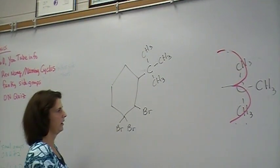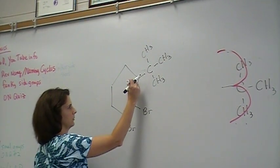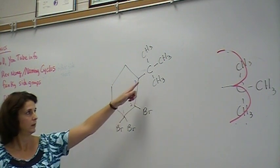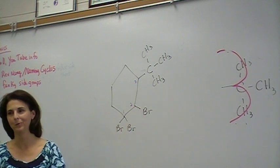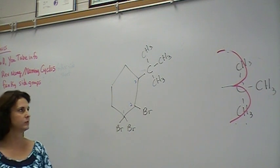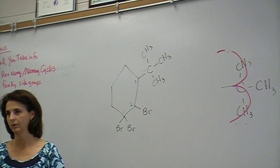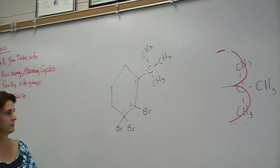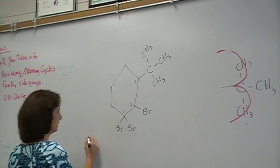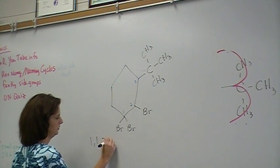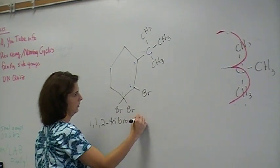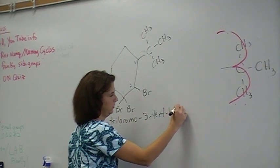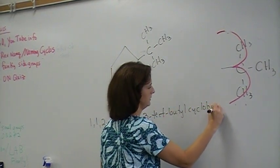I'm going to start numbering right down here at the bottom. One, two, three. I've got to figure out what the side groups are. I've got some bromos. I've got a tert-butyl. So in alphabetizing this, what comes first, the bromo or the tert-butyl? The bromo. And it's not because of the B and the T. It's because of the BR and the BU. I'm going to call it one, one, two, tribromo, three-tert-butyl, cyclohexane.